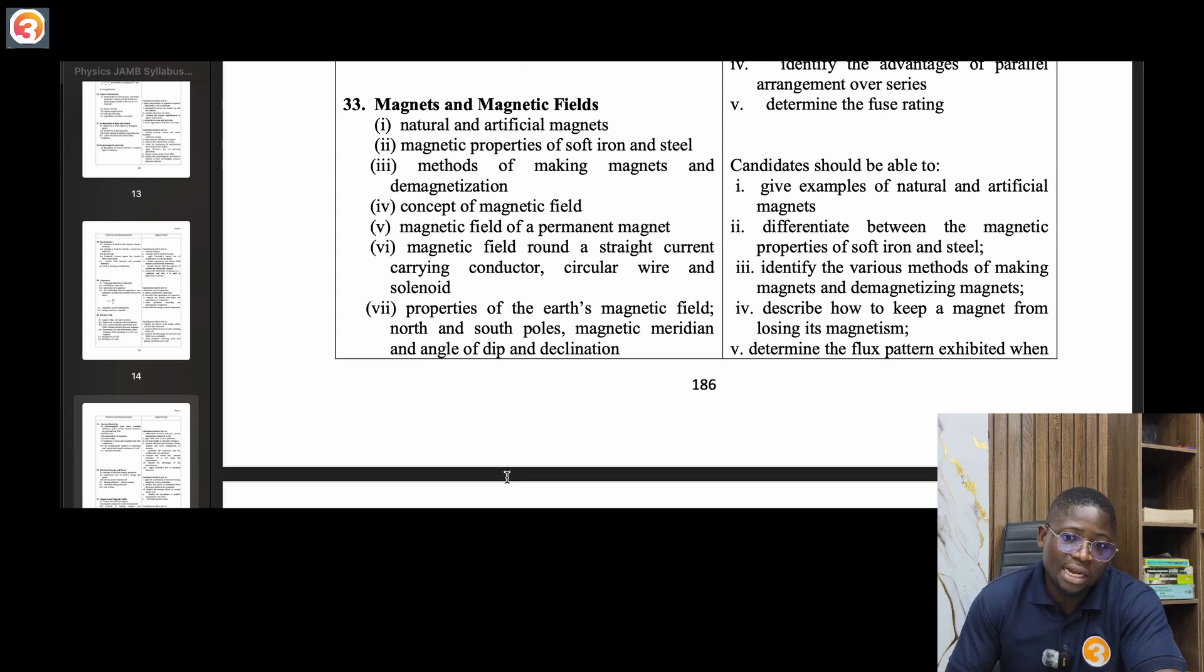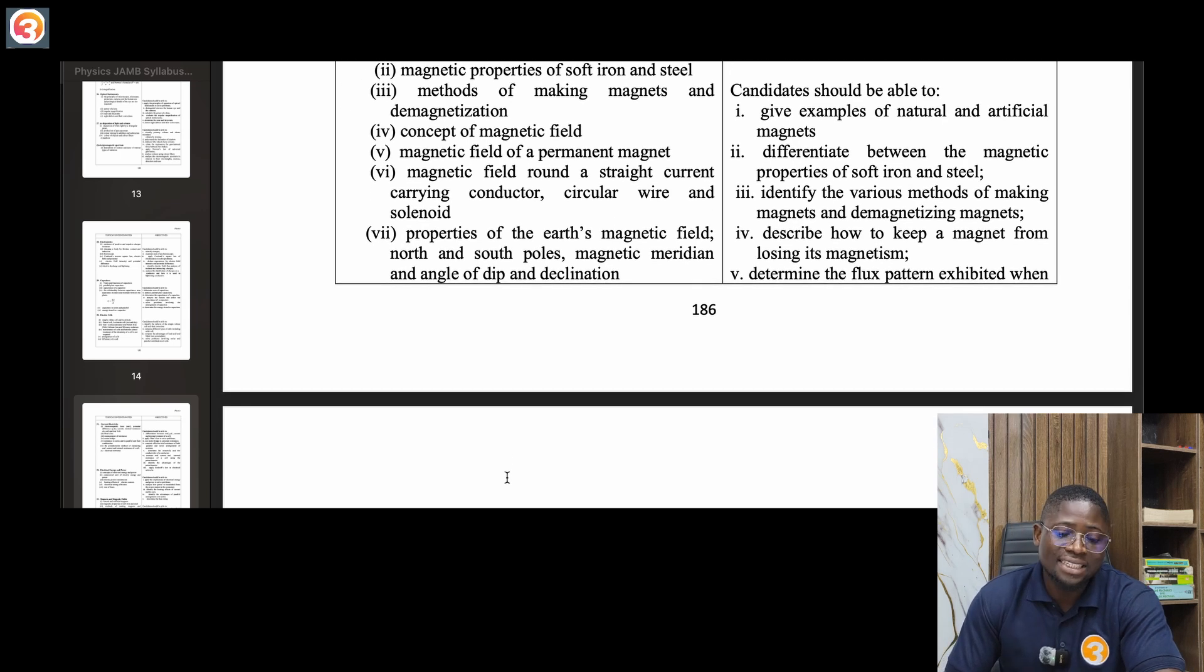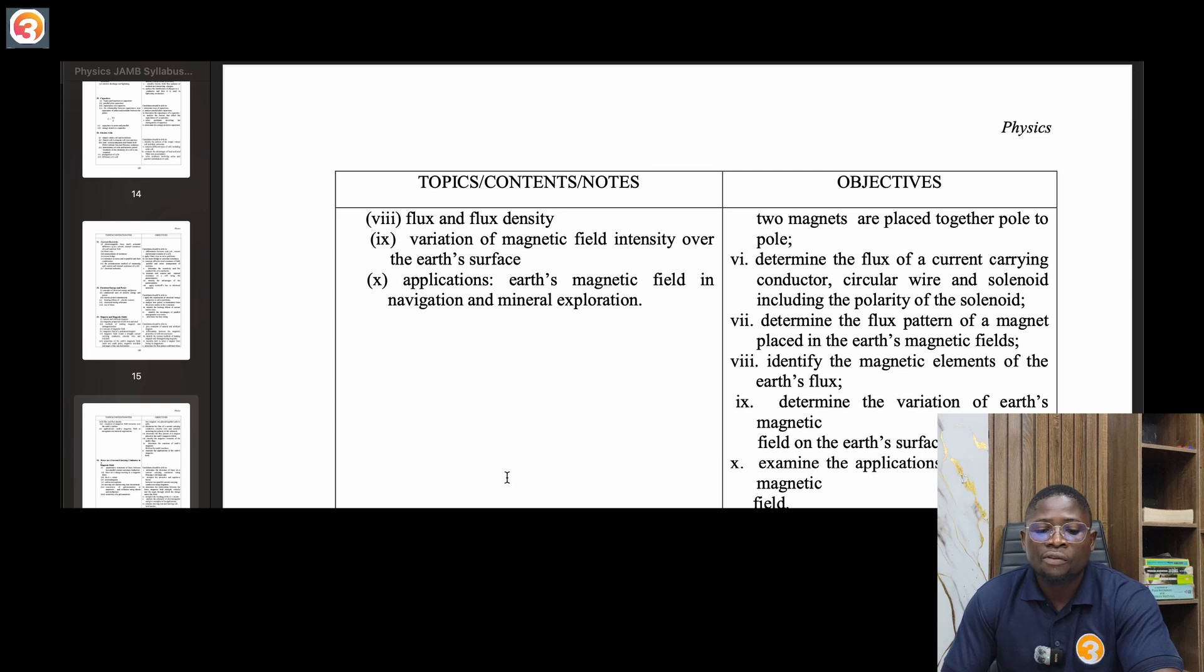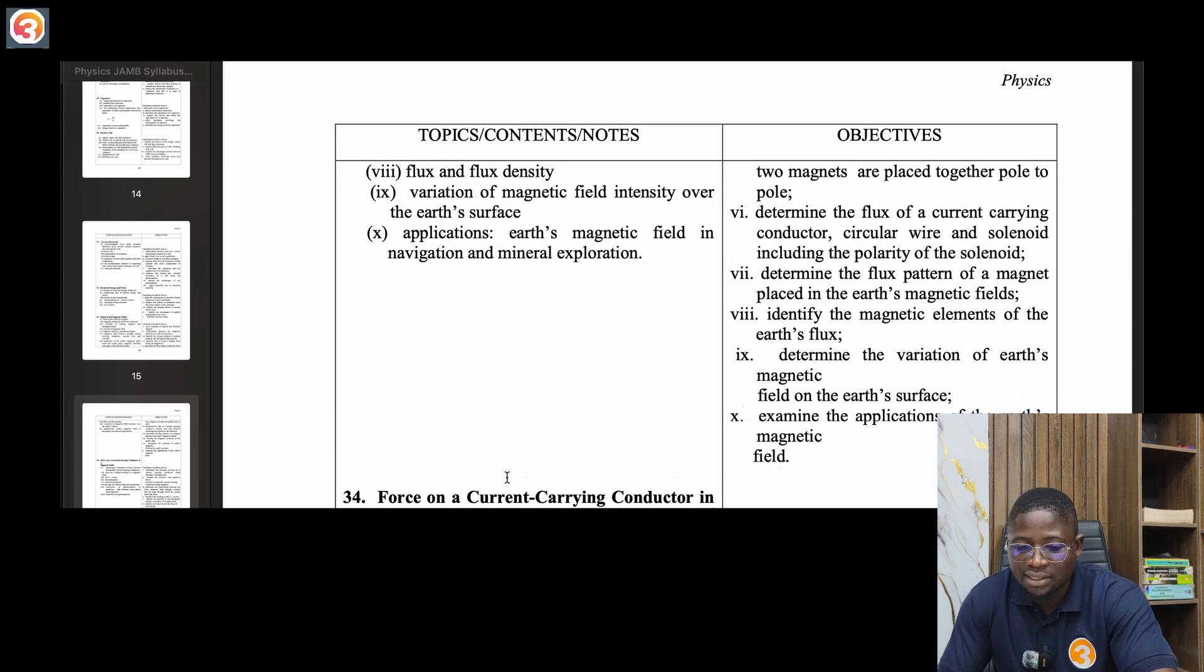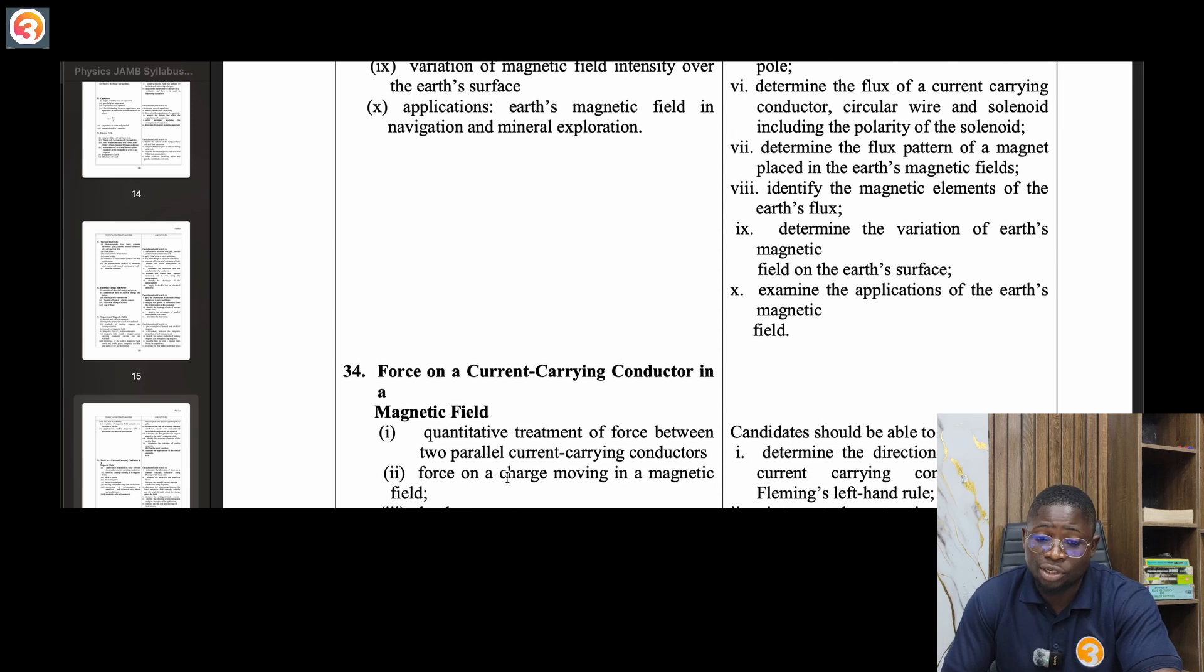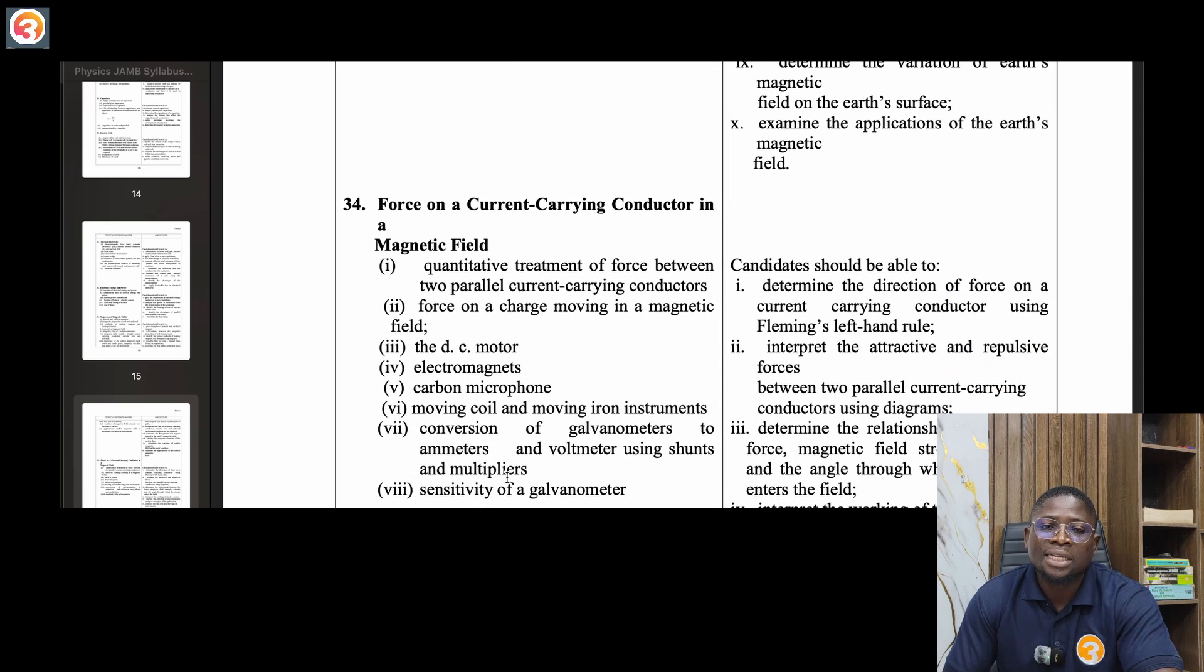Thirty-three, magnet and magnetic field. Natural and artificial magnets, magnetic properties of soft iron and steel, methods of making magnets and demagnetization, concept of magnetic field, magnetic field of a permanent magnet, magnetic field around a straight current-carrying conductor, circular wire and solenoid. Properties of the earth's magnetic field, north and south poles, magnetic meridian and the angle of dip and declination. Flux and flux density, variation of magnetic field intensity over the earth's surface. Application: earth's magnetic field in navigation and mineral exploration.